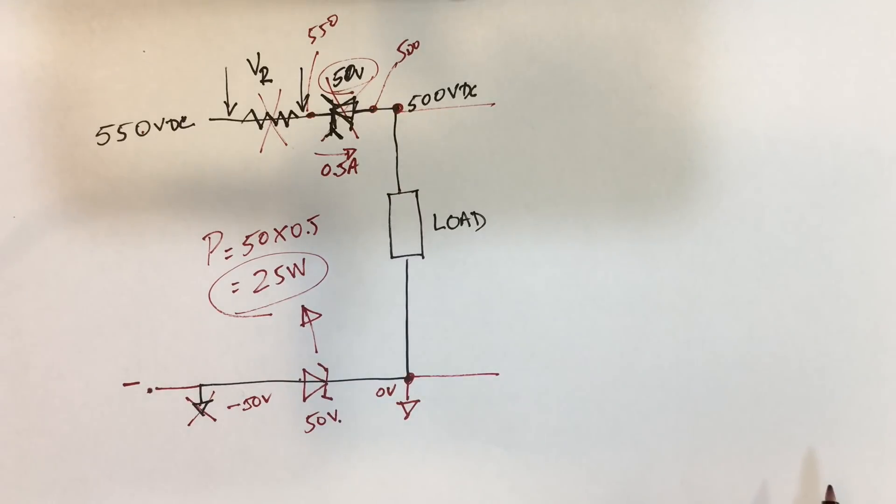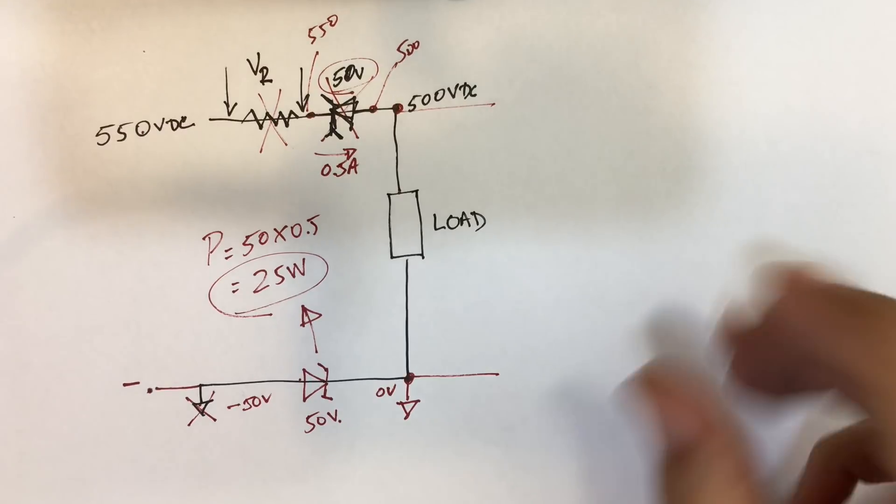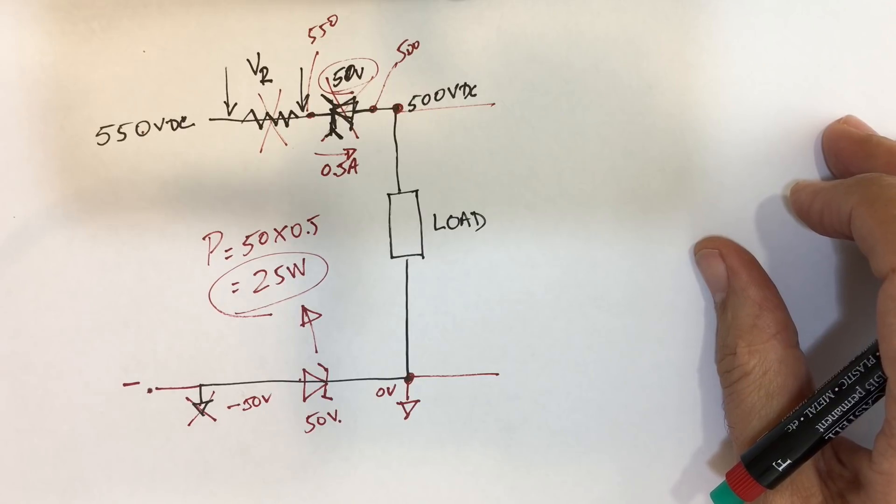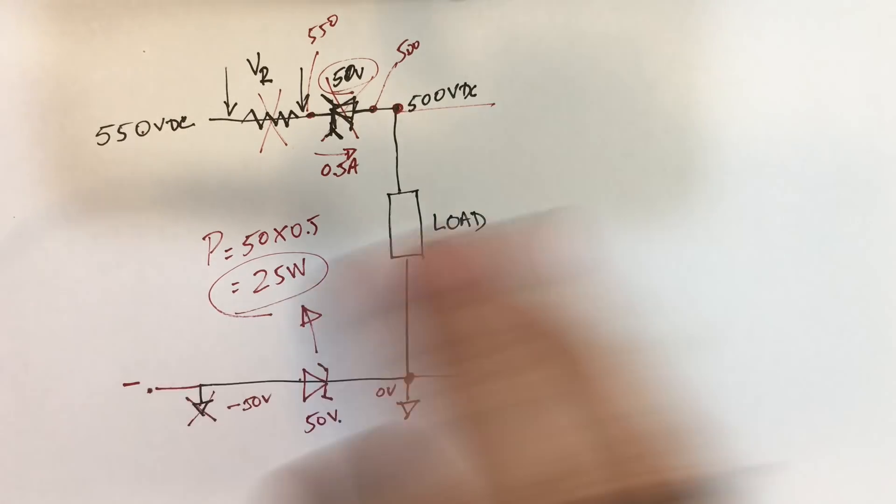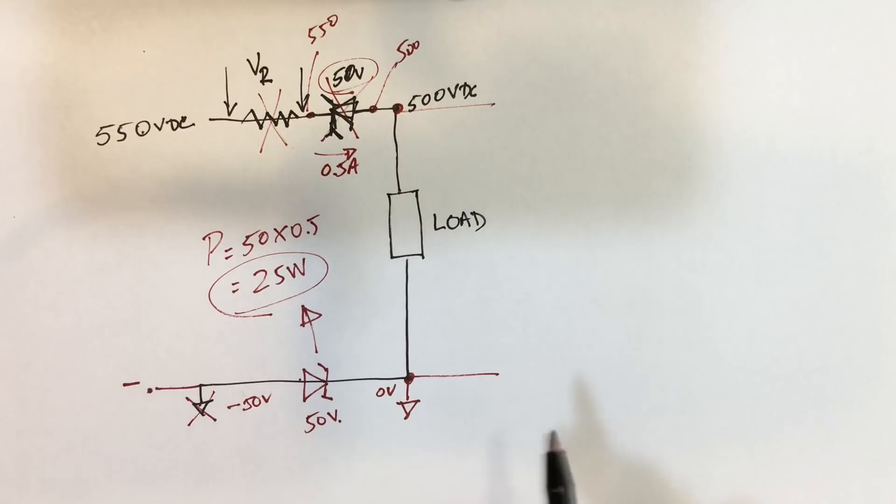The other thing is this zener is at high voltage. You've got 550 here and you've got 500 here. So this zener is going to have to be very well insulated from the chassis, from everywhere else, because although the voltage drop across it, the potential difference, is only 50 volts, the one leg is at 550 and the other one is at 500 with respect to ground. So if you touch any of those, you're going to have a bad day. So that's possibly not the way to do it.